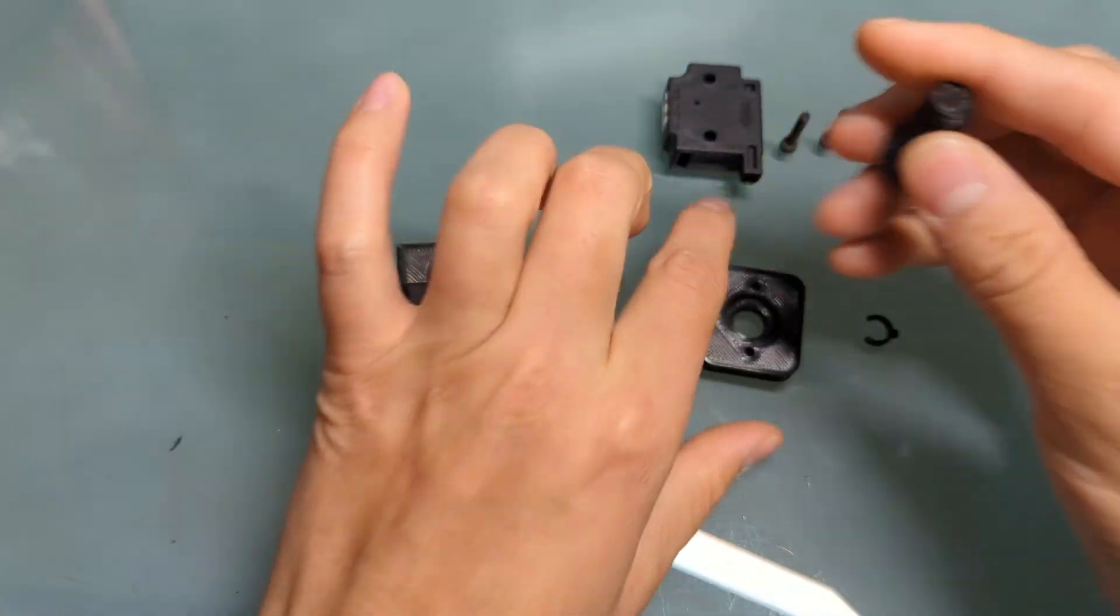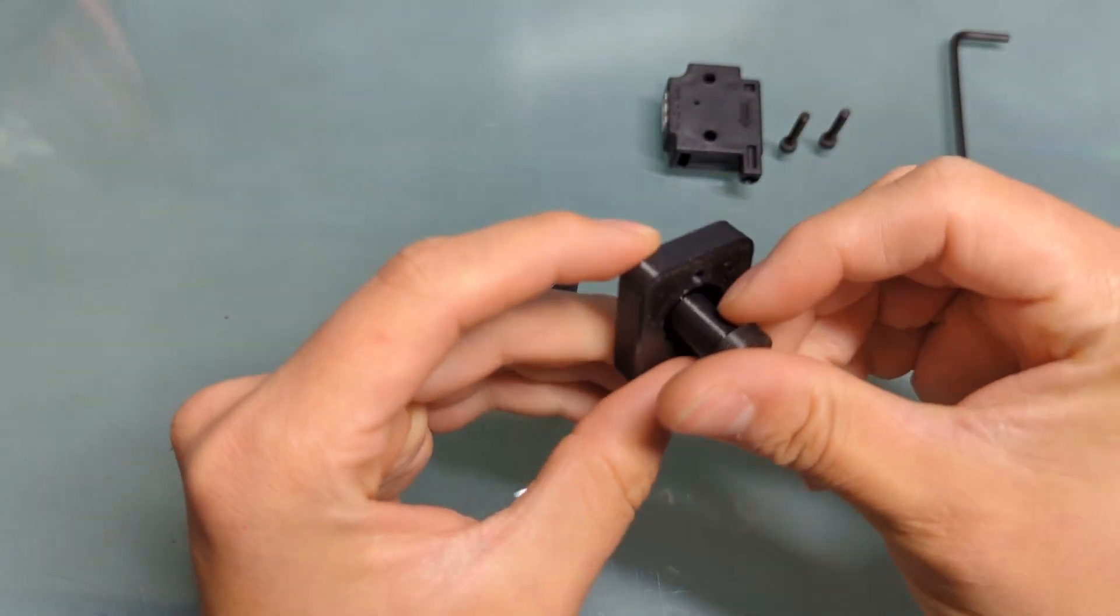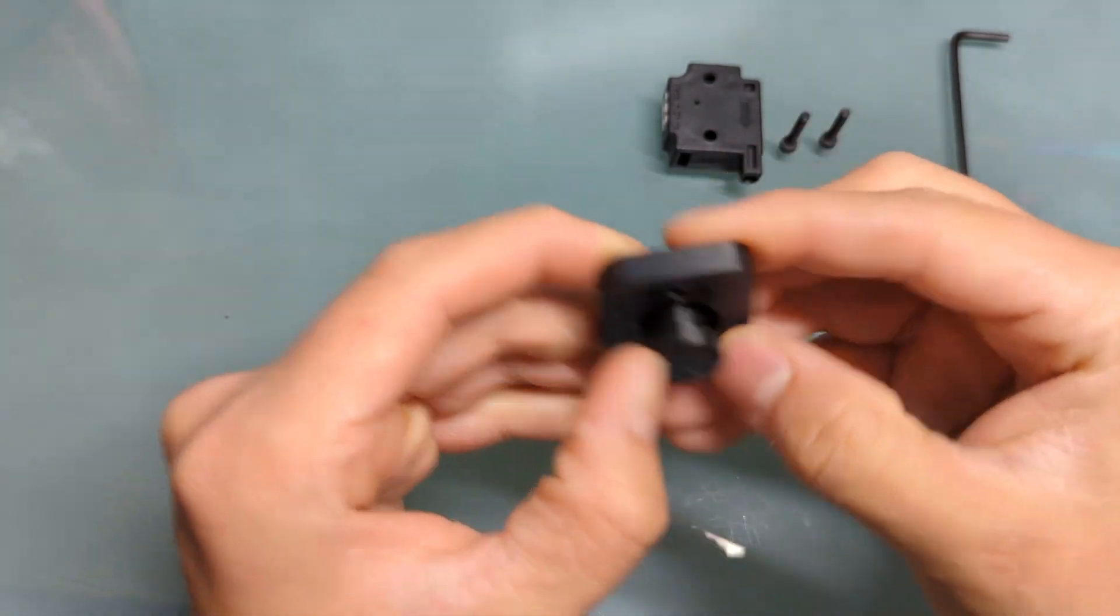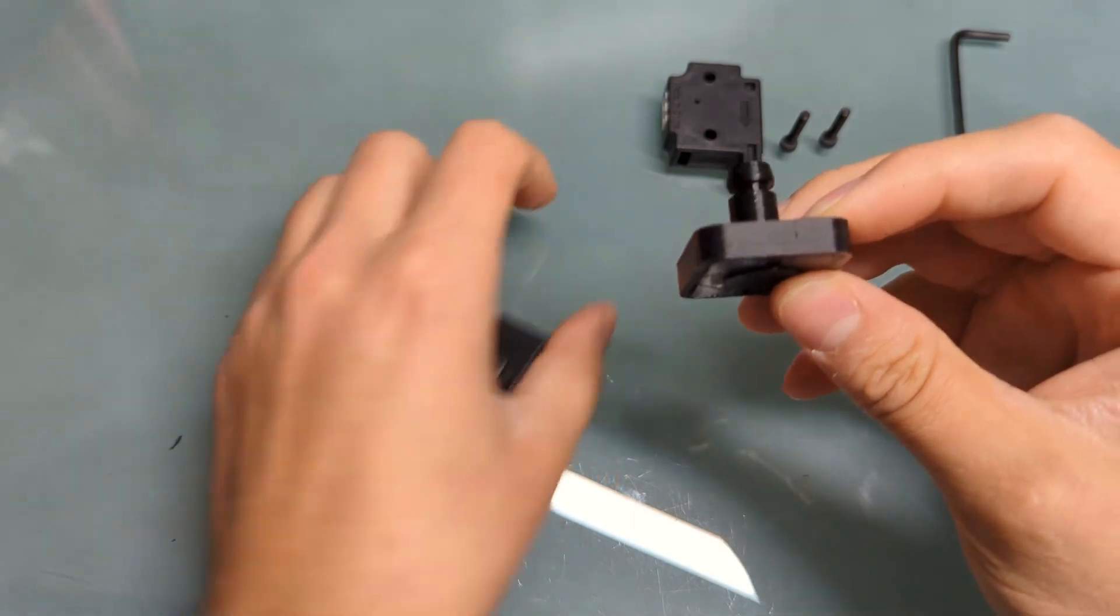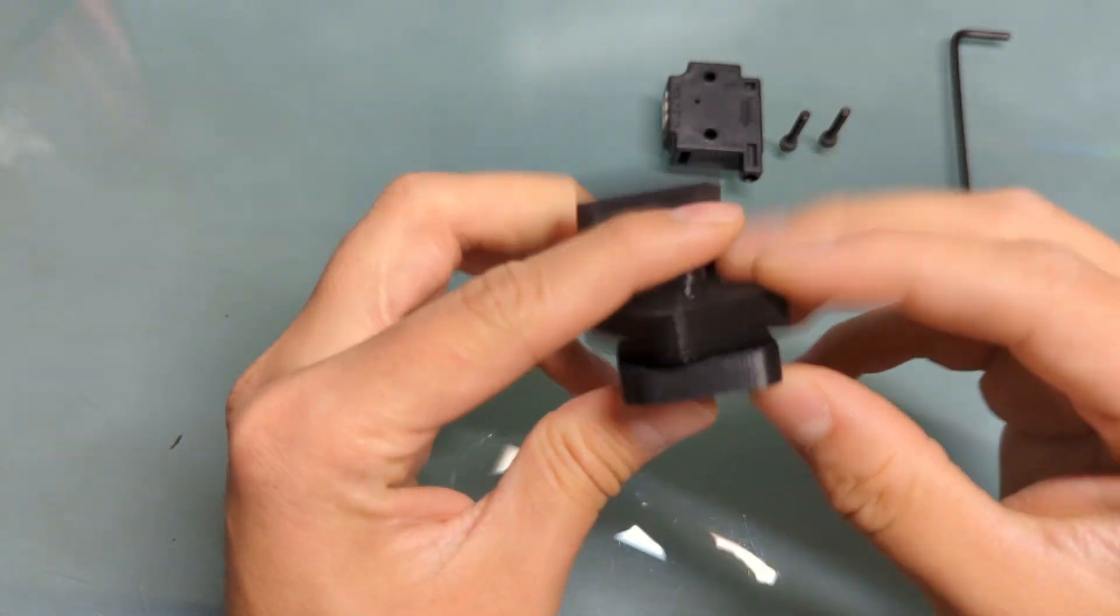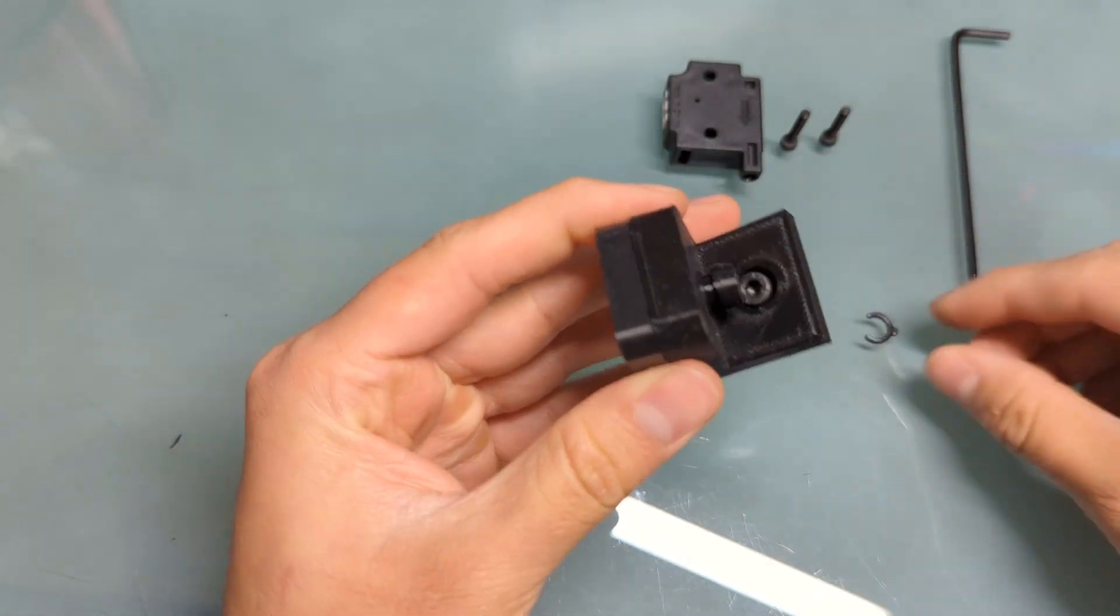Next, go ahead and grab your bolt and your mount. Push it all the way through. Pass it through the base, just like that.